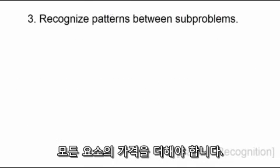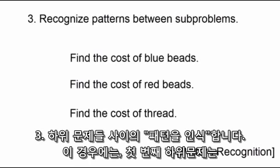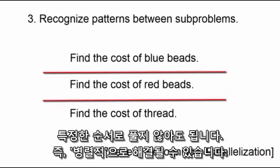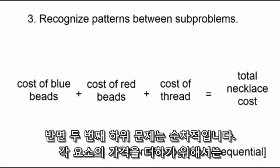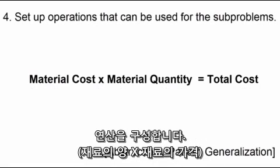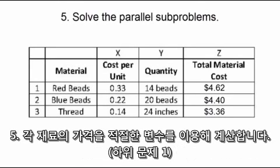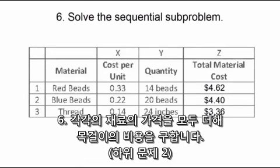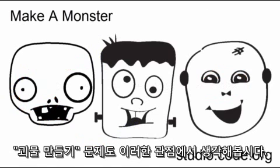Third, recognize patterns between sub-problems. In this case, the first three sub-problems can be solved in parallel — they don't have to be solved in a particular order. The second sub-problem is sequential, meaning the cost for each material must be calculated before they are added together. Fourth, set up an operation for the first sub-problems: material quantity times material cost. Fifth, calculate the cost for each type of material using the appropriate variables. Sixth, add the costs for all three materials together to determine the total cost of the necklace.